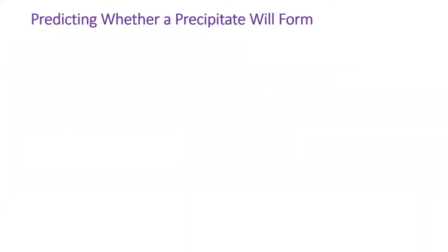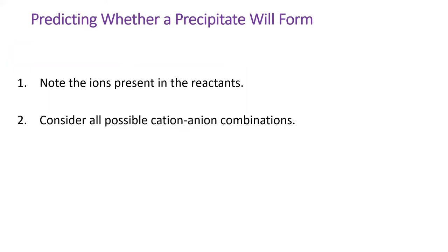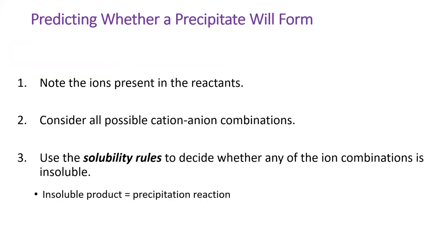You will need to be able to write the products of a precipitation reaction. There are three steps in doing so. First, note all the ions which are present at the beginning of the reaction. Then, consider what combinations of cations and anions are possible. Lastly, look up all those combinations in your solubility rules to decide whether any of the combinations are insoluble. If something is insoluble, then a precipitation reaction will occur.